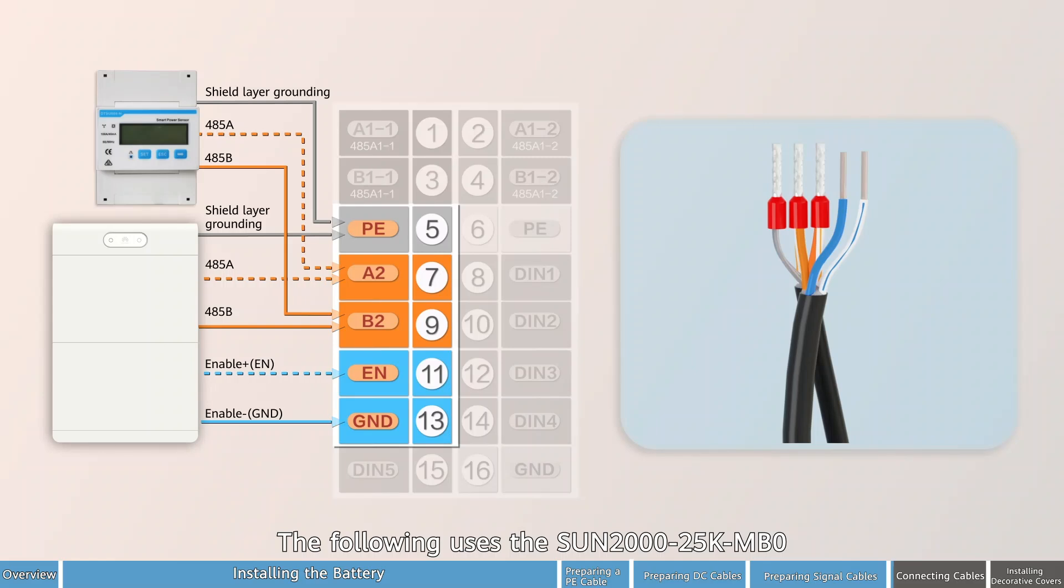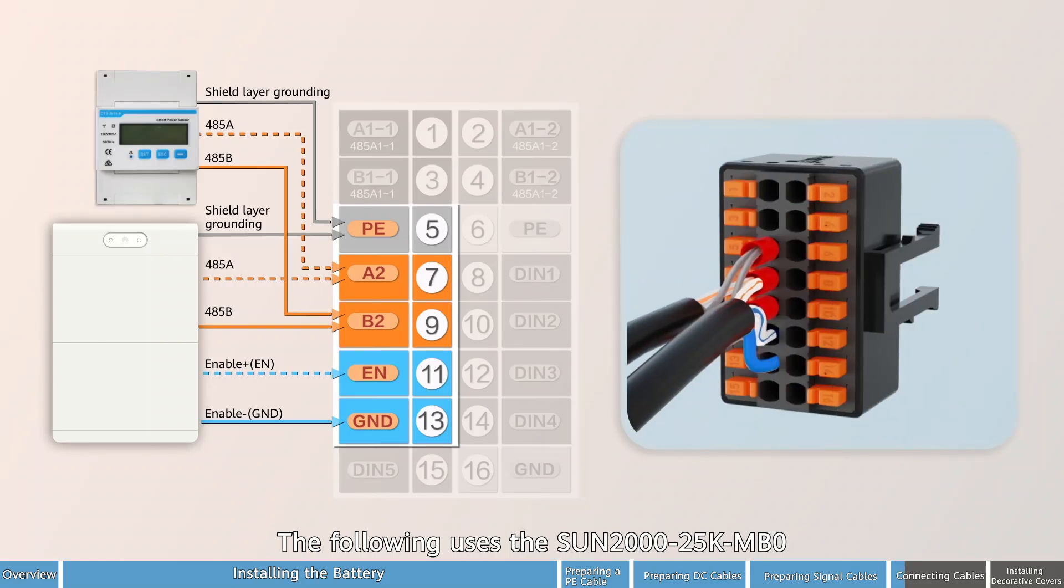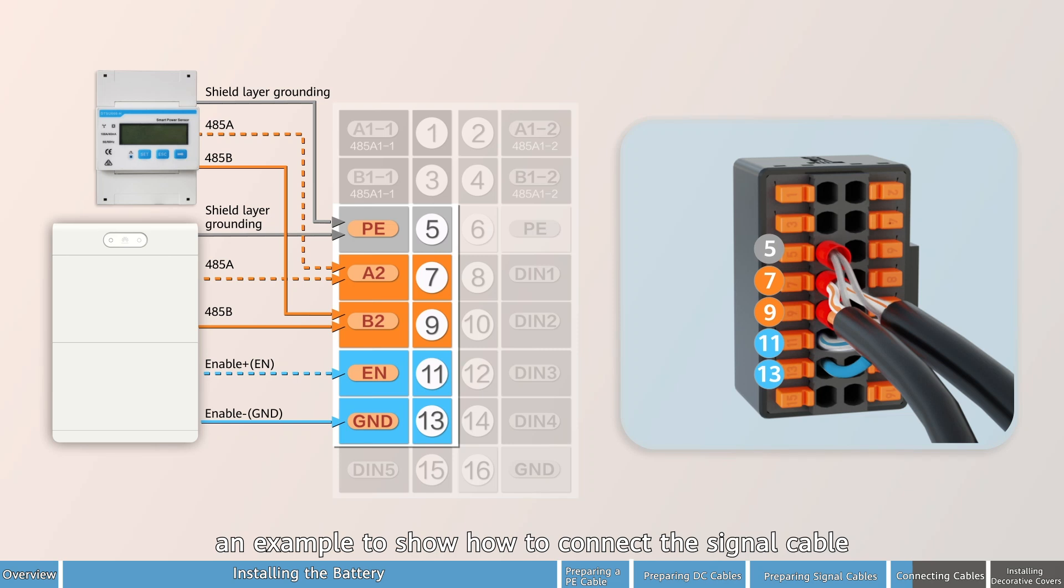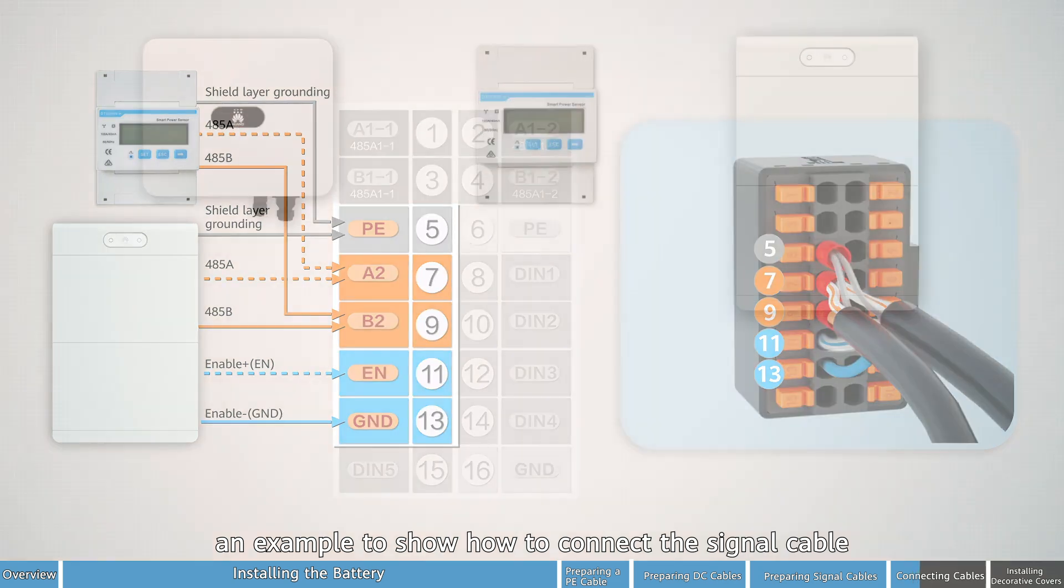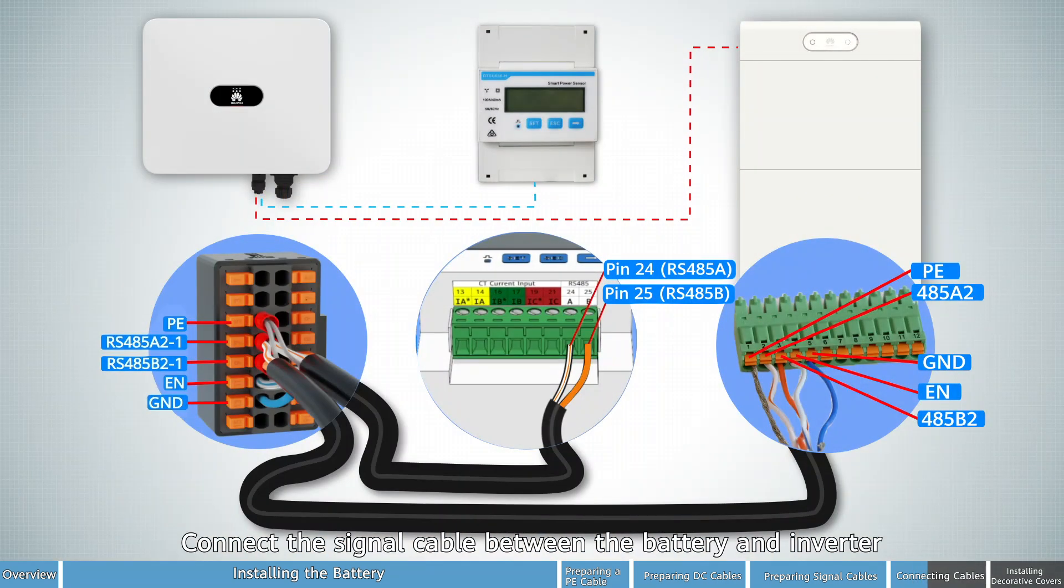The following uses the Sun 2025K MB0 as an example to show how to connect the signal cable. Connect the signal cable between the battery and inverter.